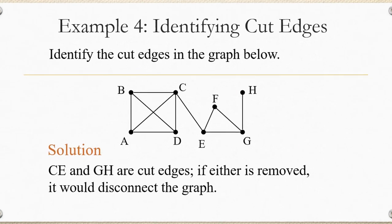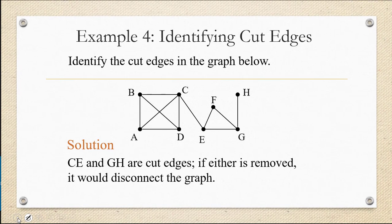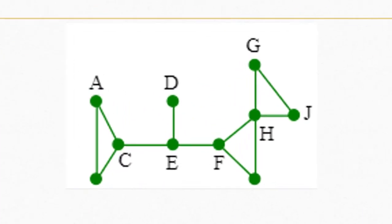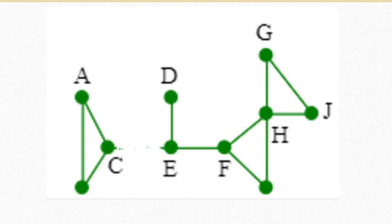So CE and GH are the cut edges in this graph, but no other edges are cut edges because you could remove them and the graph would still be connected. Let's identify the cut edges in this graph. Notice that if CE were removed, the graph would have two separate components.